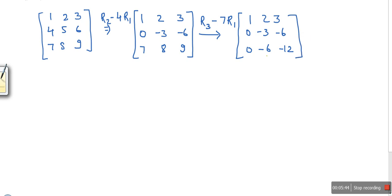Now we need to make this element also as 0. So for that purpose R1 cannot be used. If you use R1, if you perform addition or subtraction, this element again becomes non-zero, and we don't want that. So this time we will use R2. So what we will do: R3 minus 2R2. 0, minus 3, minus 6.